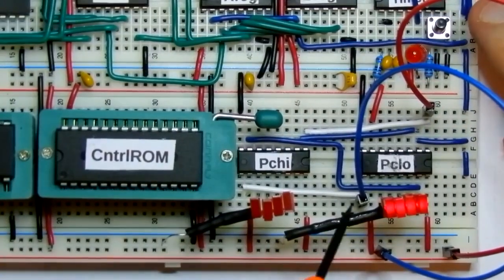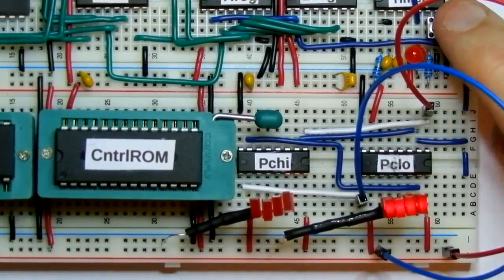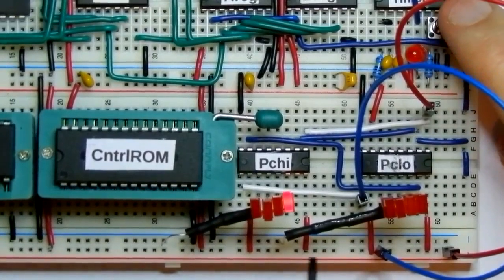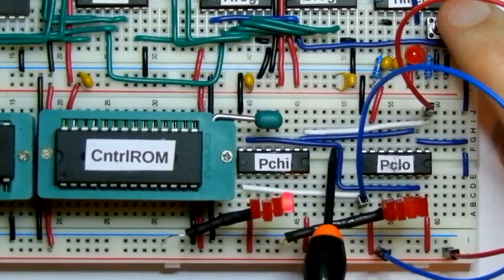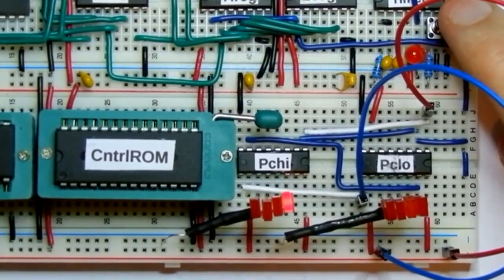When we get up to 15 the TC line is now high, gets the top chip prepared to count. The next clock pulse, that chip counts up, the TC line drops back to zero so it won't count again, and of course we go from 15 back down to zero.